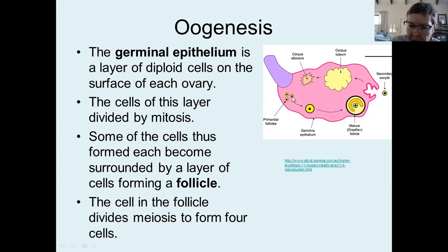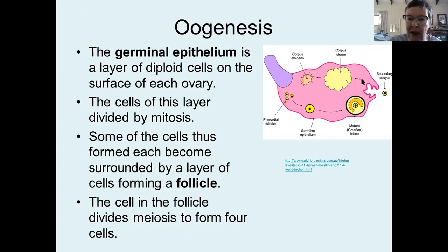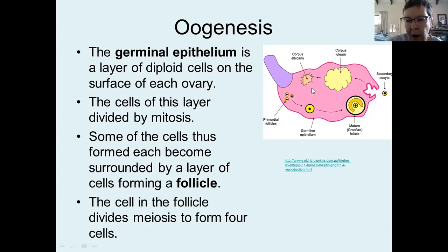The little cell in the center is the one that is going to divide in time by meiosis and form four cells. This shows you the monthly sequence of events — a monthly cycle being approximately 28 days in an average human female. Every single month, one of those primary follicles starts to mature. Primary follicle equals the cell in the middle that is going to divide by meiosis and some layers of cells around the outside.